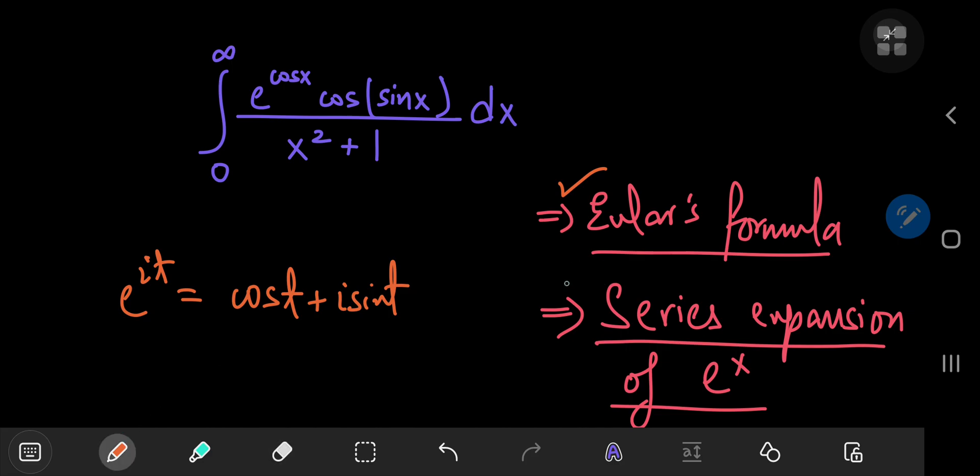The second tool that we need is the series expansion of the exponential function. So e to the x in the series expansion form equals the infinite sum over non-negative integers k of x to the k divided by k factorial.